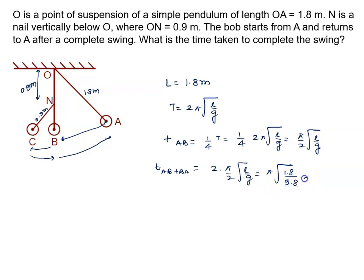Now we need to calculate the time from B to C. How much time from B to C? Again you will say 1/4 of the new time period, so T dash. Then 1/4 into 2π, and the length will change to L dash by g. So we will say this is given by π/2 root L dash upon g.